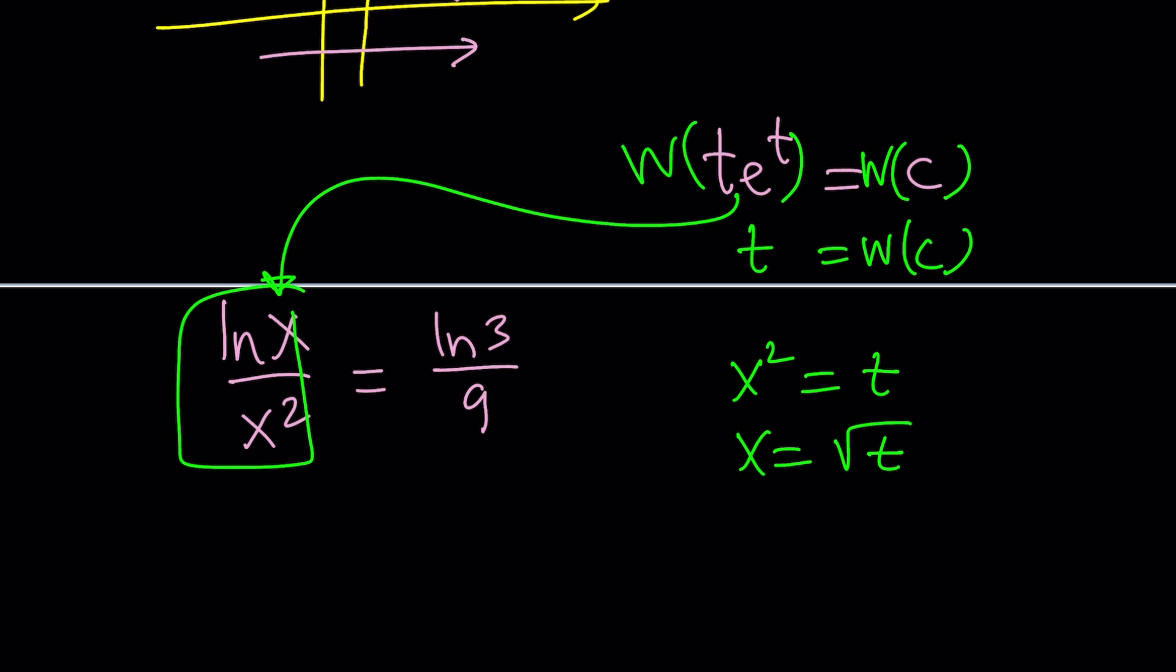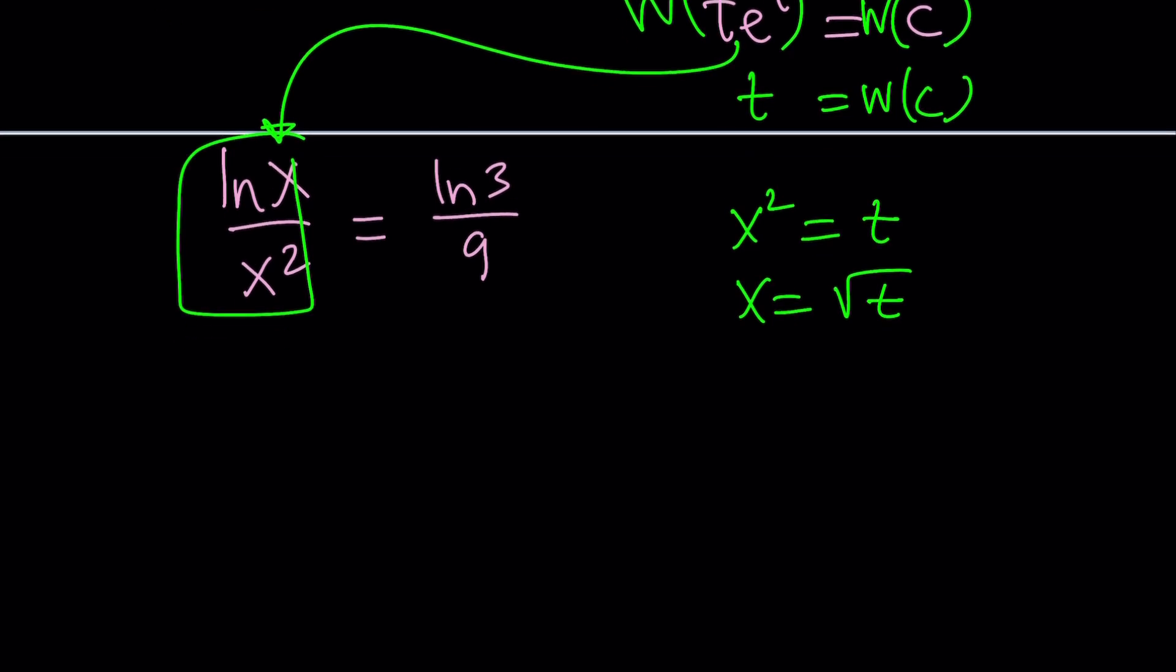But, does x have to be positive? Yes, because of the natural log function. Make sense? So, everything works. Now, we're going to go ahead and plug this in. Replace x with square root of t and x^2 with t. Right-hand side doesn't have to be changed. Let's leave it at that for now.